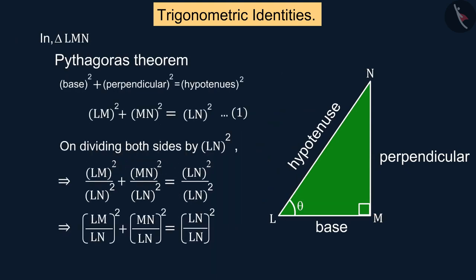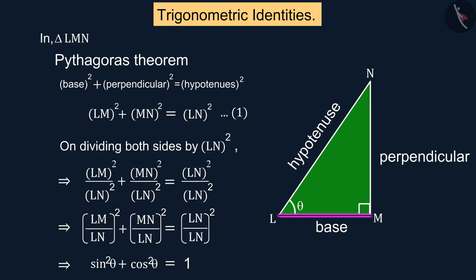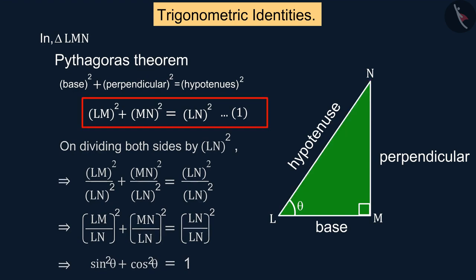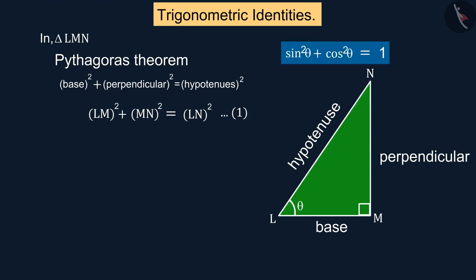In the right angle triangle with the help of the Pythagoras theorem, giving us a trigonometric identity. What if we divide by the square of LM instead of the square of LN in equation 1? Let's see.